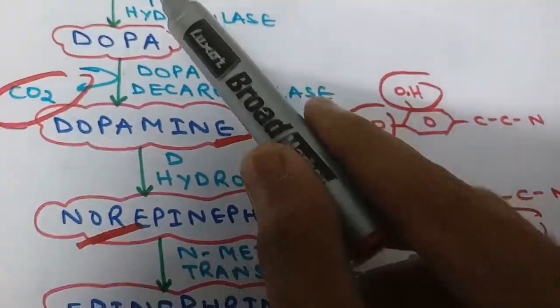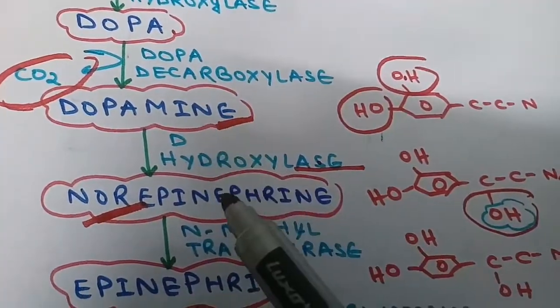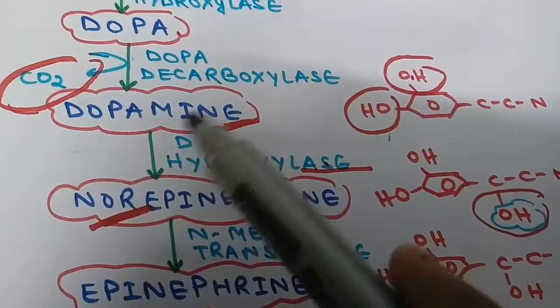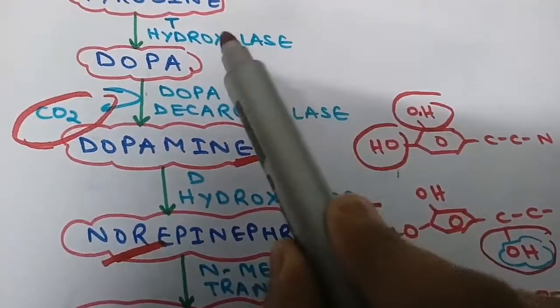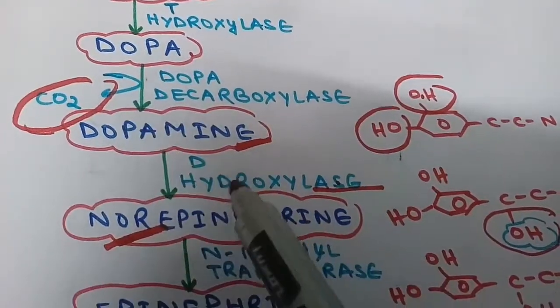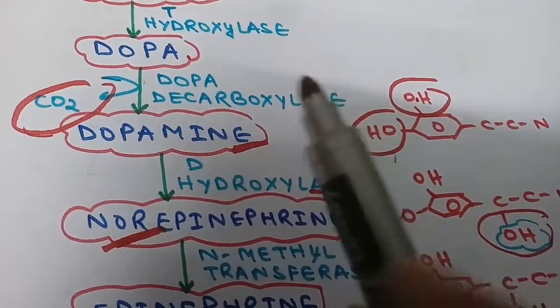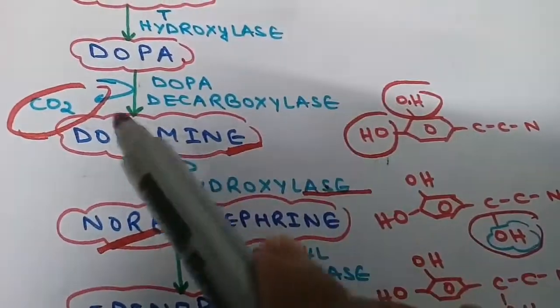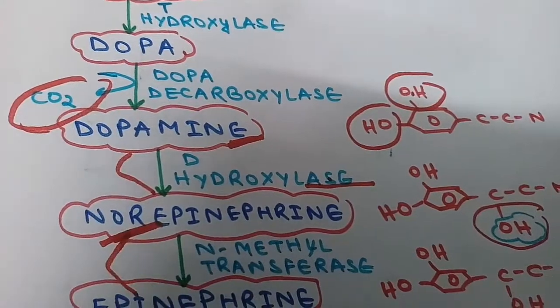These are the five most important steps: tyrosine to DOPA, DOPA to dopamine, dopamine to norepinephrine, norepinephrine to epinephrine. The enzymes are hydroxylase, then decarboxylase, then hydroxylase again, because dopamine and norepinephrine differ by only one OH group, and one methyl group difference between norepinephrine and epinephrine.